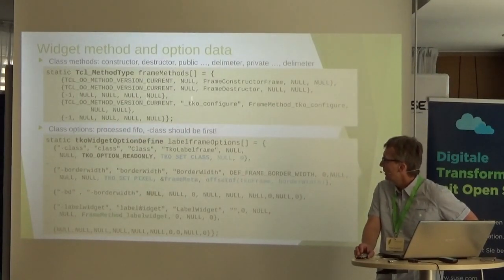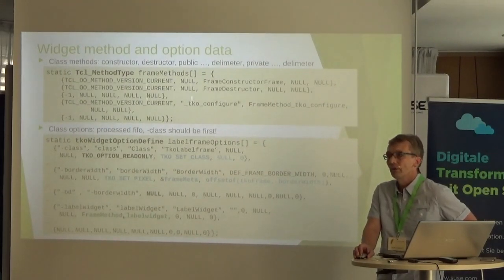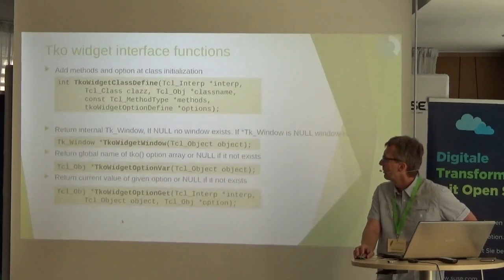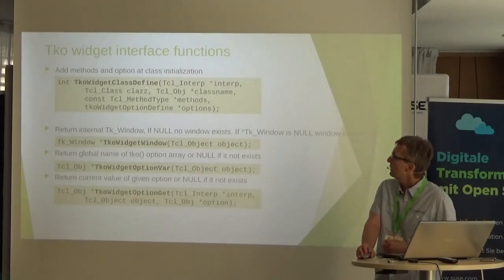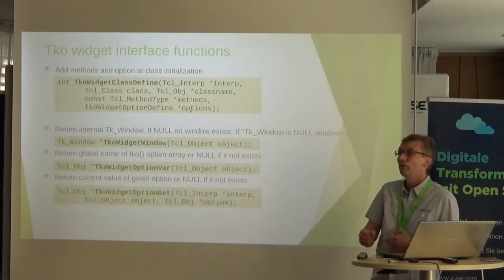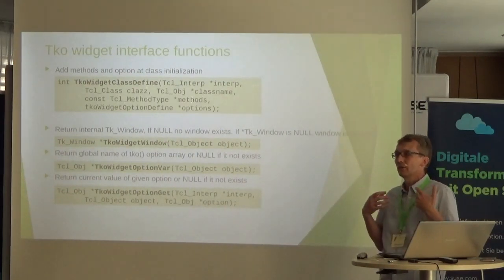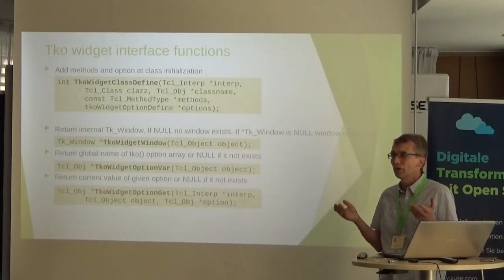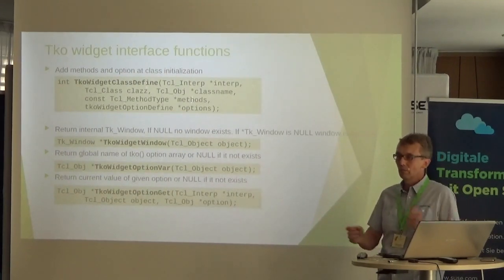There is a simple synonym option, and you can also have an option defined in its own Tcl method. A helper function handles initialization of the class using the method list and option list as parameters, creating the methods in the class automatically. It is also possible to do this by hand.